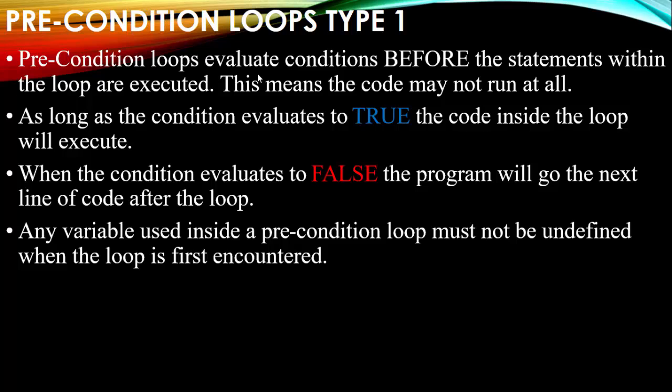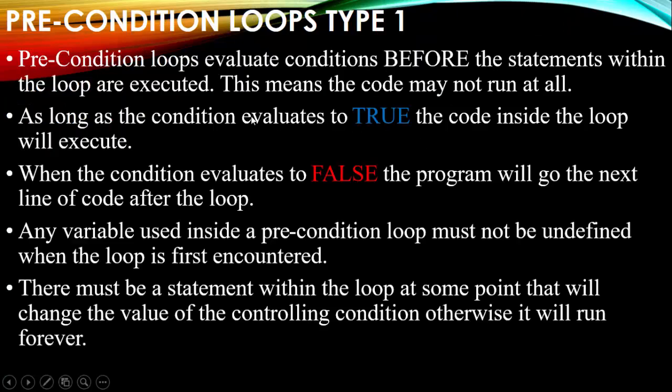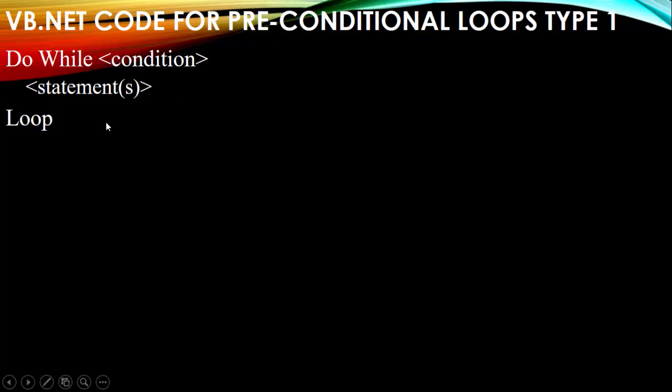Any variable used inside a precondition loop must not be undefined when the loop is first encountered — you must declare your variables with a data type. In Visual Basic we do that by dimensionalizing our variables. There must also be a statement within the loop that will change the value of the controlling condition, otherwise you'll be stuck in an infinite loop. The pseudocode is: While condition is true — run statements — End While. In VB.NET: Do While condition — statements — Loop.